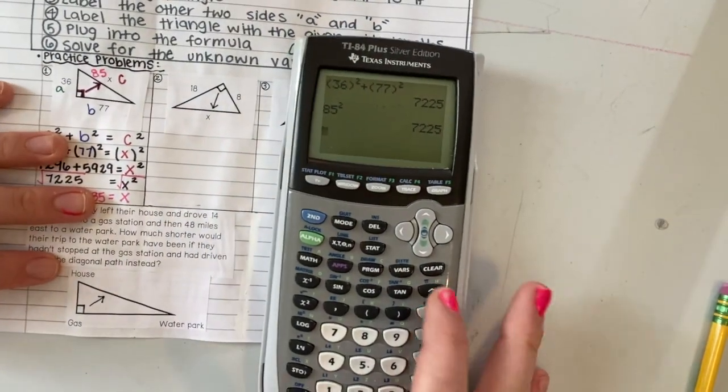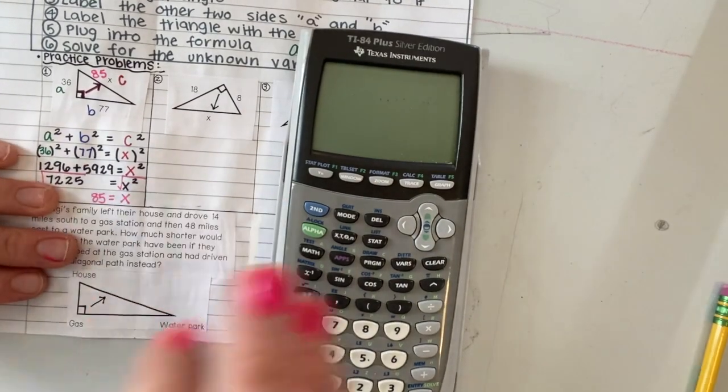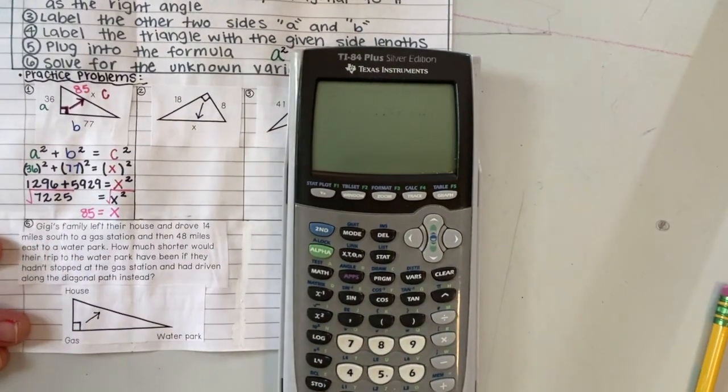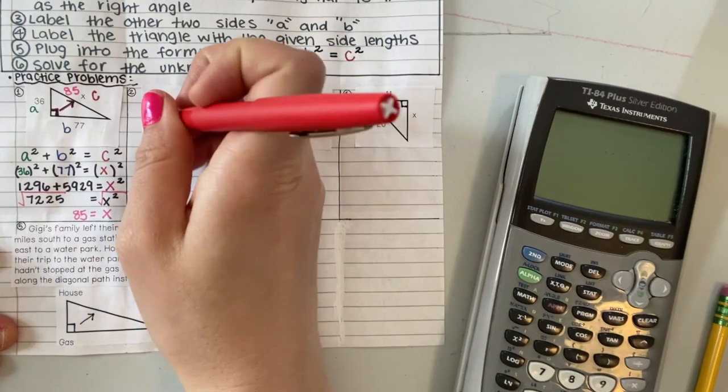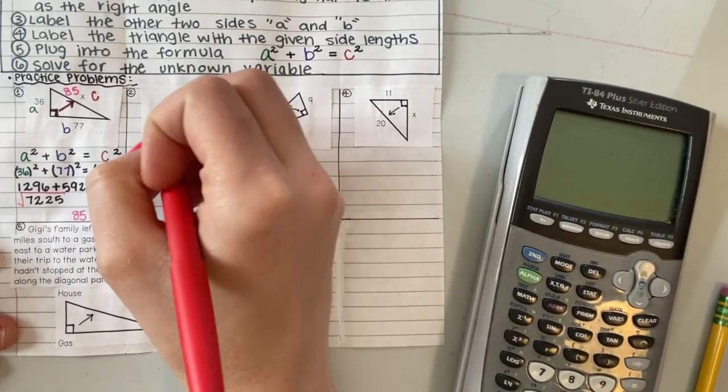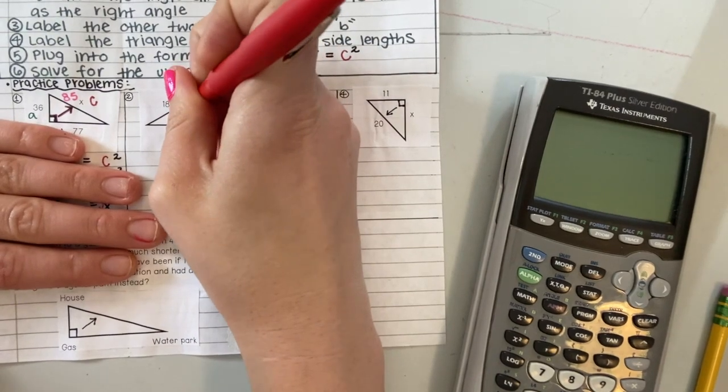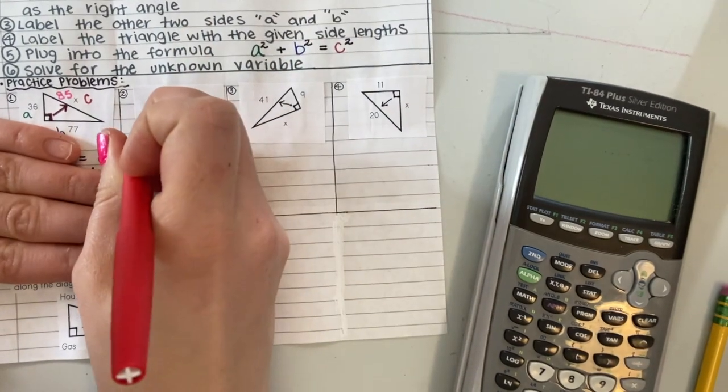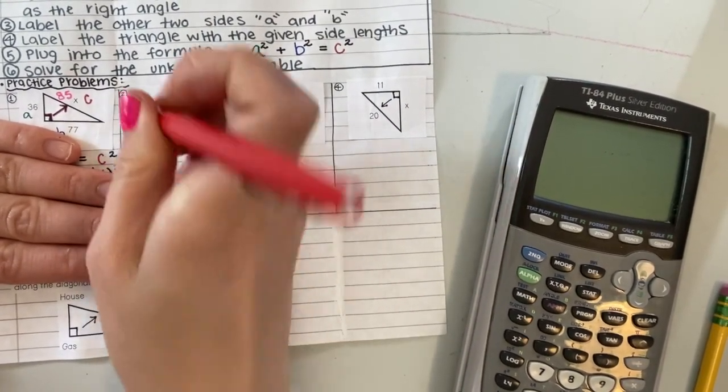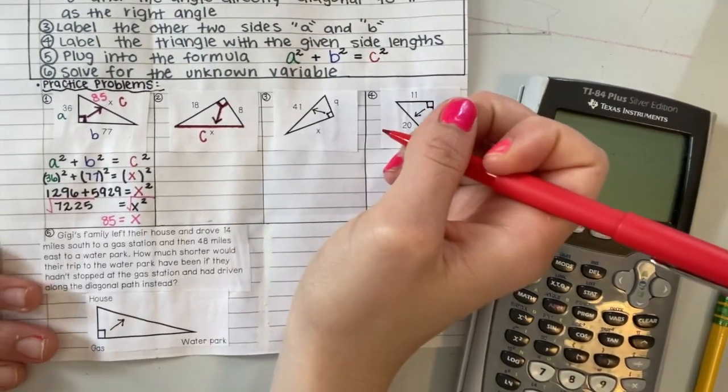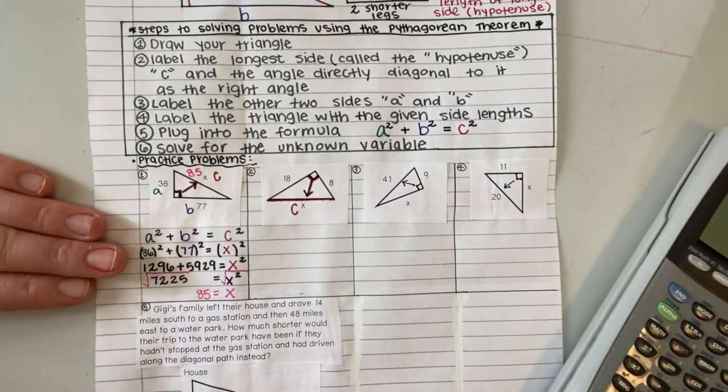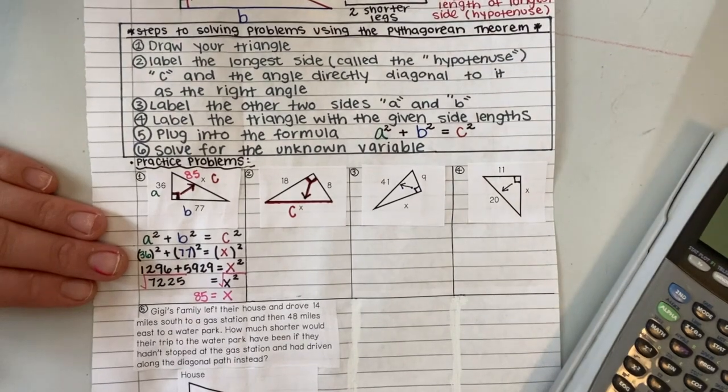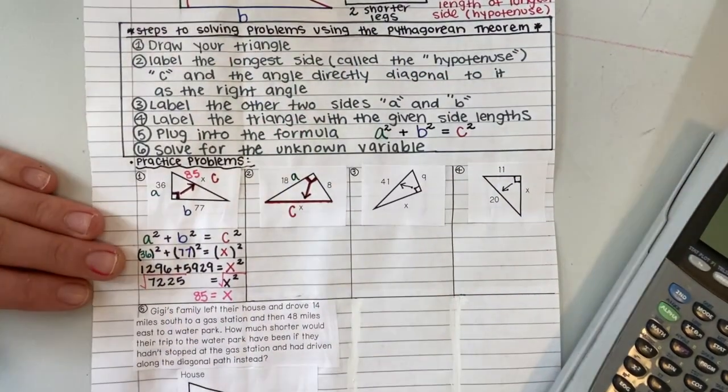Let's do another example. My next example, my steps are going to be the same. My first step is going to be to identify my right angle. So we'll draw my triangle. Label the longest side, the hypotenuse. My longest side is always the one that's diagonal from my right angle. So this is my longest side. We're going to label that C. Now I need to label A and B. I'm going to label this one A and this one B.